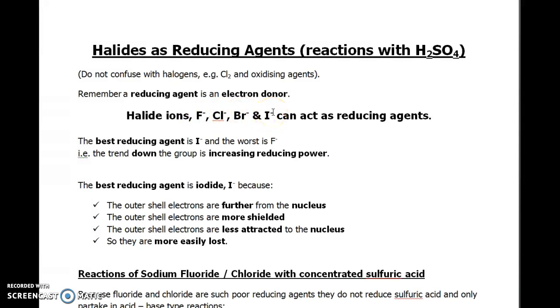A reducing agent is an electron donor. What happens is that the halide ions release electrons and they become oxidized themselves. So fluoride will turn into fluorine, chloride into chlorine, bromide into bromine, iodide into iodine.